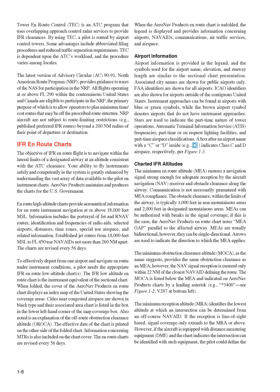To effectively depart from one airport and navigate on-route under instrument conditions, a pilot needs the appropriate IFR on-route low-altitude charts. The IFR low-altitude on-route chart is the instrument equivalent of the sectional chart. When folded, the cover of the AeroNav Products on-route chart displays an index map of the United States showing the coverage areas. Cities near congested airspace are shown in black type, and their associated area chart is listed in a box. Also noted is an explanation of the off-route obstruction clearance altitude, OROCA. The effective date of the chart is printed on the other side of the folded chart. Information concerning MTRs is also included on the chart cover. The on-route charts are revised every 56 days. When unfolded, the legend provides information concerning airports, NAVAIDs, communications, air traffic services, and airspace.